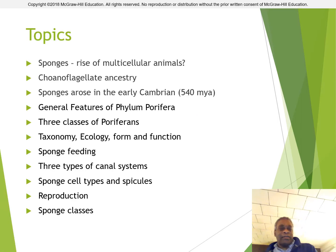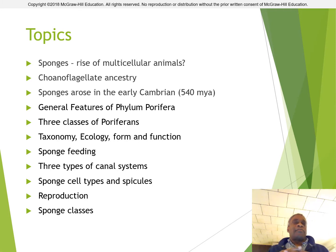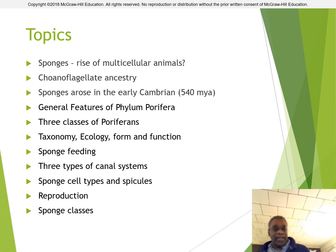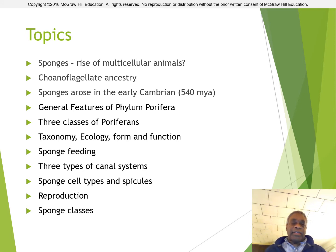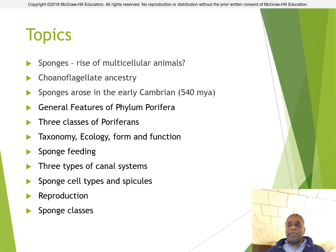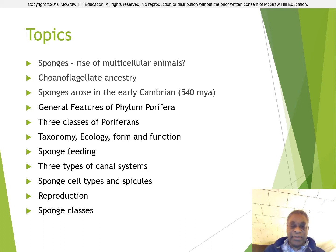If you look at topics we're covering, we're going to be covering sponges starting off as how they represent the rise of multicellular animals. We'll talk about their ancestry and when they first arose. We'll talk about some general features of the phylum and also talk about the three classes of Porifera. We'll go briefly into taxonomy, ecology, form and function, including sponge feeding. We'll talk about their water vascular system, the canal system, which is unique to sponges. And then we'll talk about sponge cell types, reproduction, and finish off for the last classes.